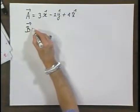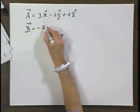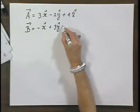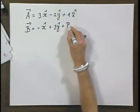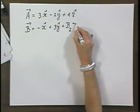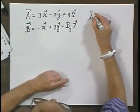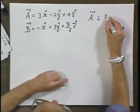And B equals minus X roof plus three Y roof plus B of Z, which I do not know. But I'm telling you that vector A is perpendicular to vector B.